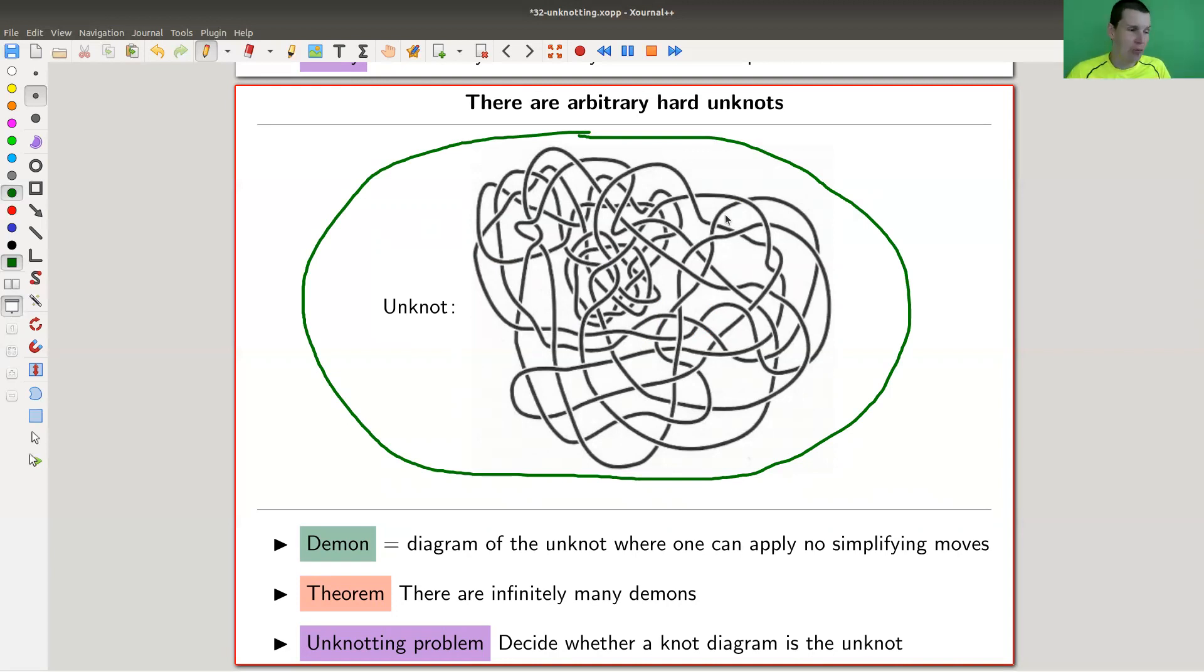It's just what people call a demon. It's a diagram of the unknot where you can't apply any simplification moves. You need to make it more complicated before you can simplify it to the unknot. One of the beautiful theorems here is that there are infinitely many of those. For any number of crossings, essentially, you will find a demon with more crossings.